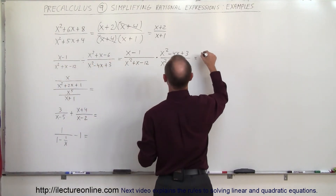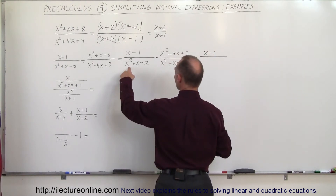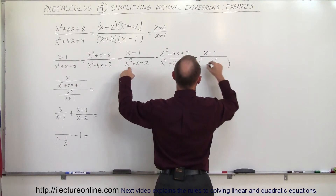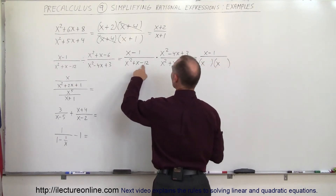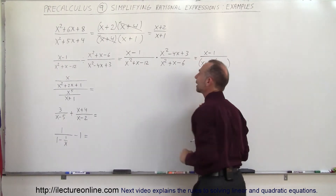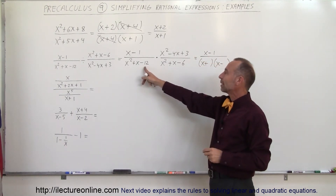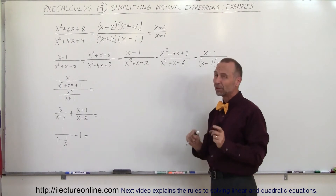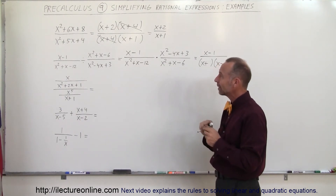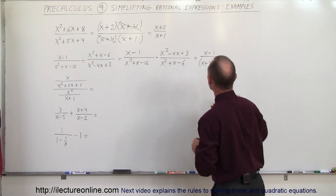So this becomes equal to x minus 1. The denominator has two binomials: x and x. One sign is plus and one is minus, because otherwise when I multiply I can't get a negative. I'm looking for two numbers: when I multiply I get minus 12, when I add I get plus 1. That means the positive number is 1 bigger than the negative number, so plus 4 and minus 3 should work.